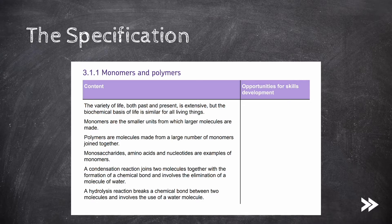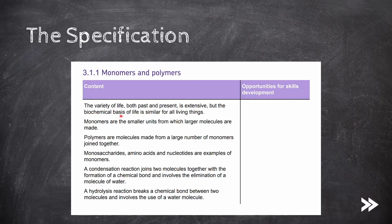So, let's start with a look at our specification. We should know that the variety of life, both past and present, is extensive, but the biochemical basis of life is similar for all living things.